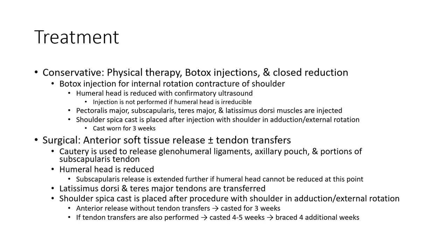Treatment considerations include physical therapy for contracture reduction and botox injection for internal rotation contracture of the shoulder. Surgical options include anterior soft tissue release plus or minus tendon transfer.